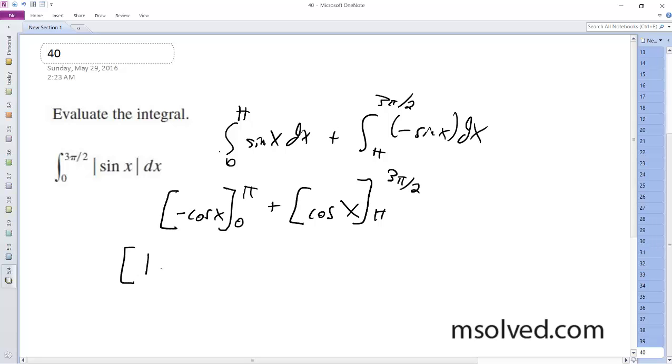So we get 1 minus negative 1 plus 0 minus negative 1, which is equal to 2 plus 1, which is equal to 3.